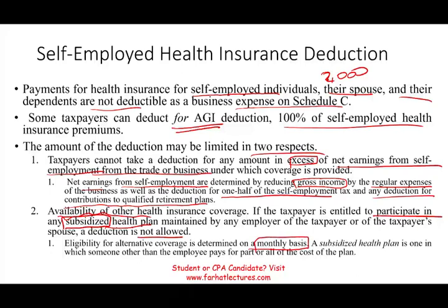Eligibility for alternative coverage is determined on a monthly basis. Every month you must ask yourself: do I have access to a subsidized health insurance plan? If not, you can take the deduction; if yes, you cannot. 'Subsidized' means someone other than you pays part or all of the cost. For example, at my college they pay the majority of health insurance costs — that plan is fully subsidized.